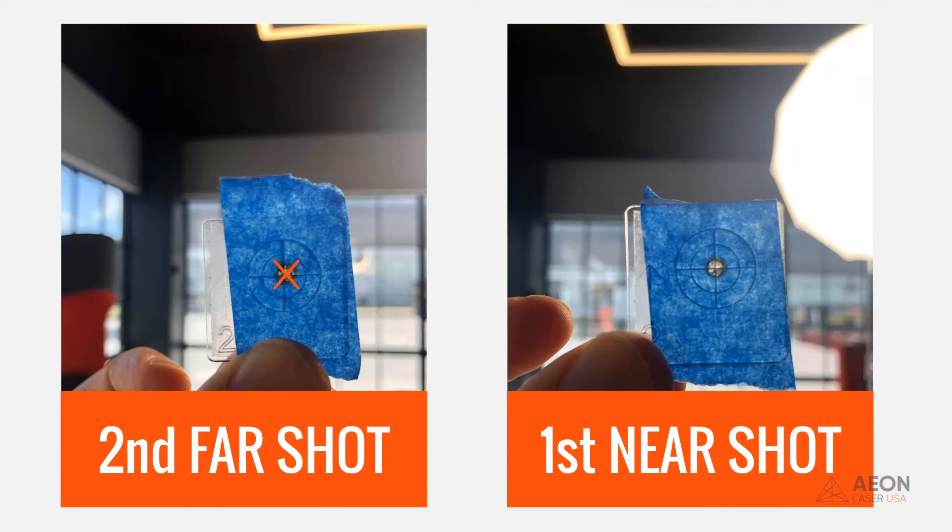Our far shot is exactly where the near shot was, which again was the only point of this exercise to make sure that from second base to third base we are aligned.